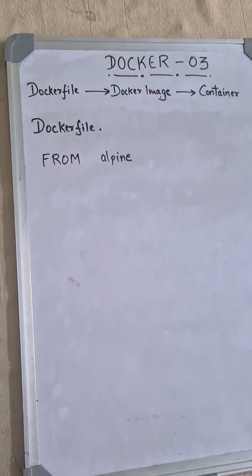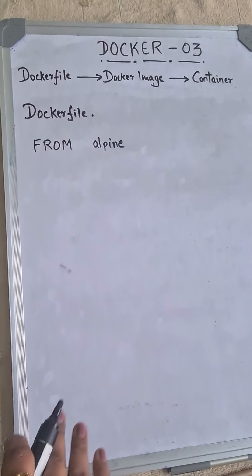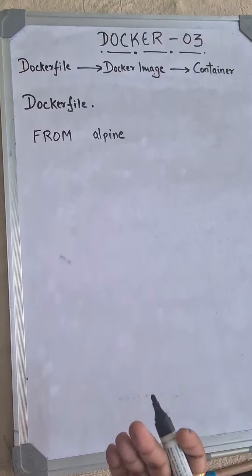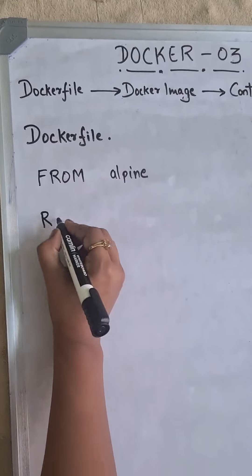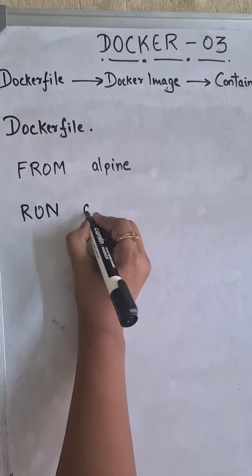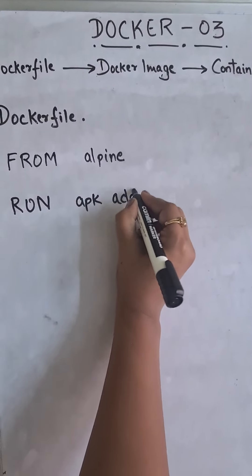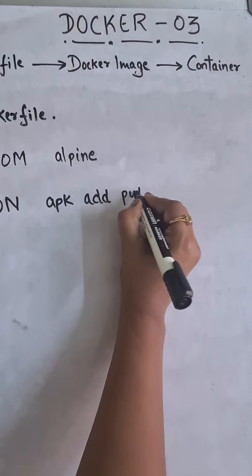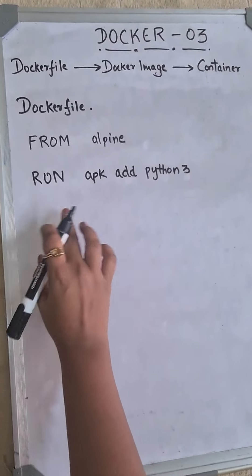So now let's say that I have a dependency in our application, and the dependency is that it requires Python. So this is where we'll make use of RUN, and I'll write the next command: RUN apk add python3. So the second command is RUN.